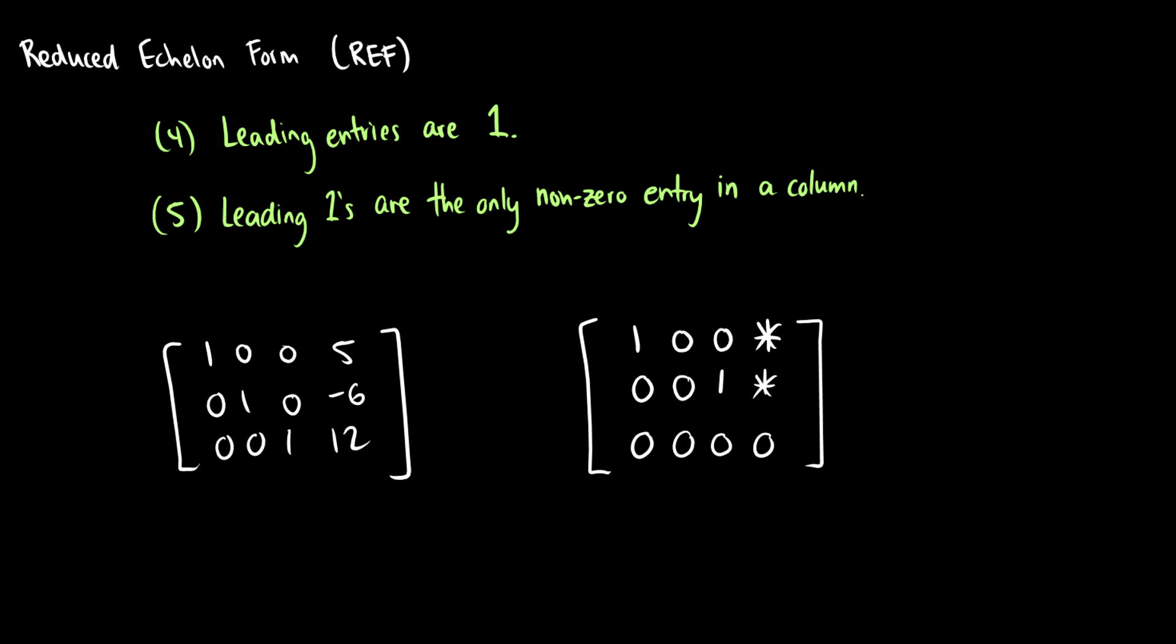There is one more type of echelon form and that is reduced echelon form, which is called REF. In this one, all of the leading entries are going to be 1, and the leading ones are the only non-zero entry in a column. What this means is that we explicitly solve—the first line tells us what x1 is, the second line tells us what x2 is, the third line tells us what x3 is. So we can explicitly solve.